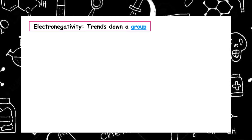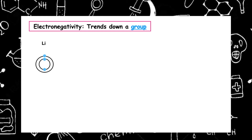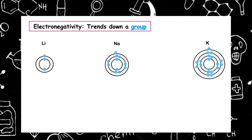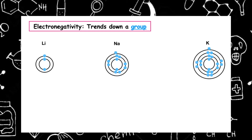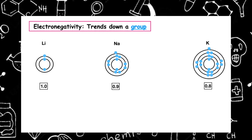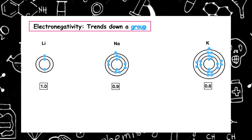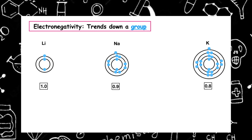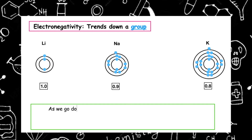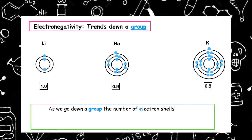If we look at the trends going down a group, we want to draw the electron arrangement diagram, and we're going to go down group one. So we're going to look at lithium, sodium, and potassium. What we can see, which is different in these diagrams, is that the number of electron shells are increasing. So as we go down a group, the number of electron shells increase.